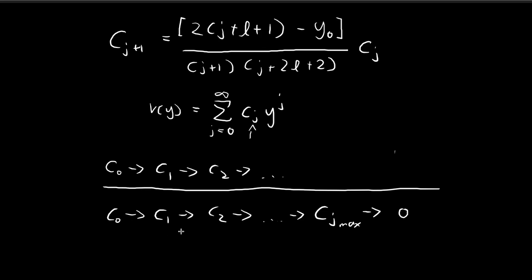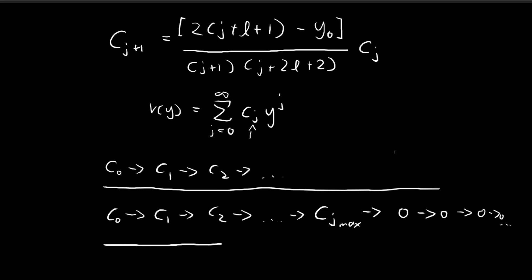This ensures that the string of coefficients does not generate all the way to infinity. When it reaches zero, substituting back into the recursion formula gives zero multiplied by something, so the output is also zero. All subsequent terms will then be equal to zero.